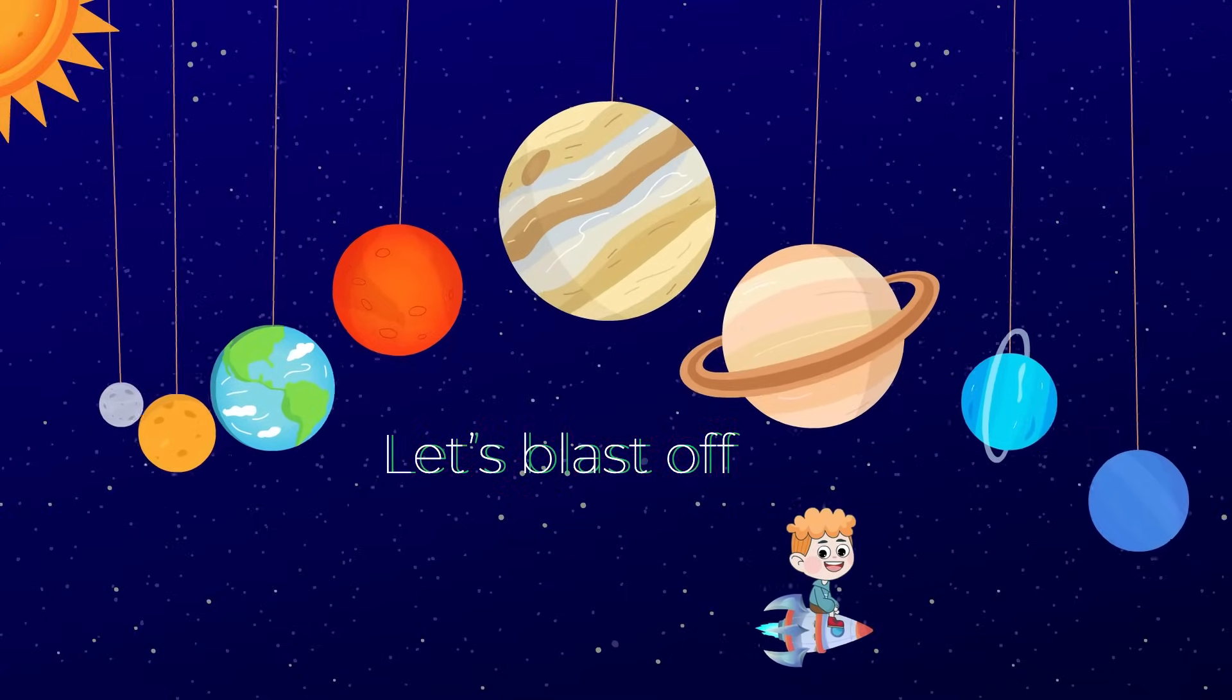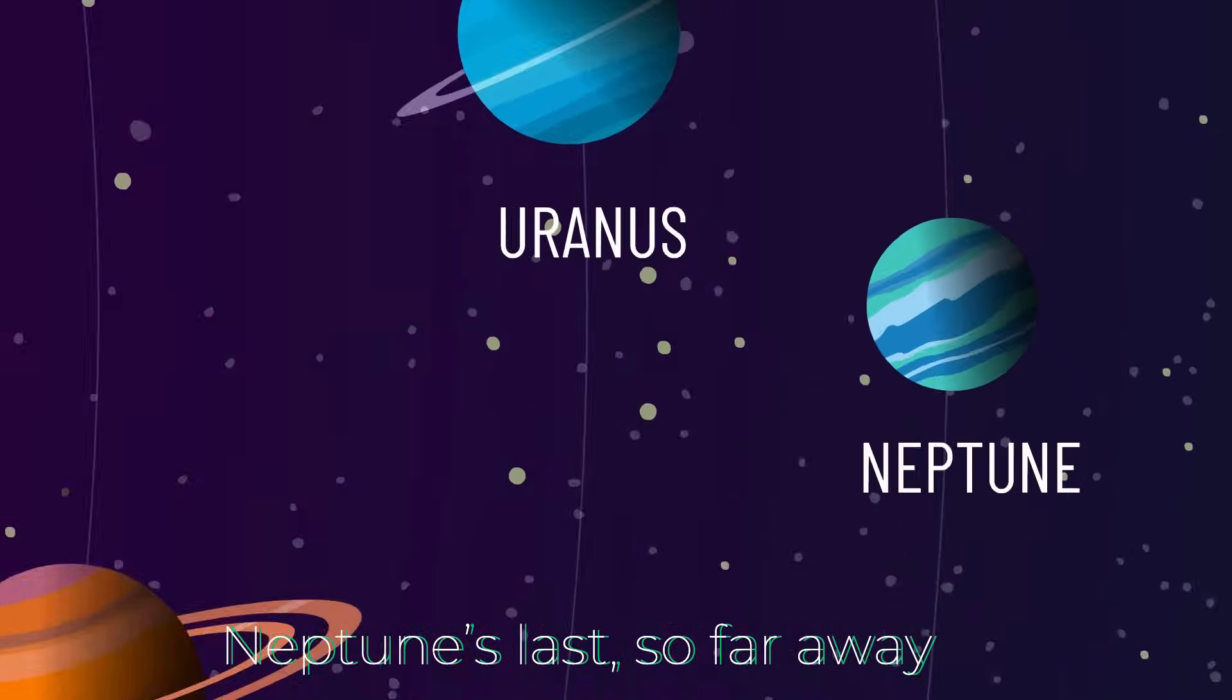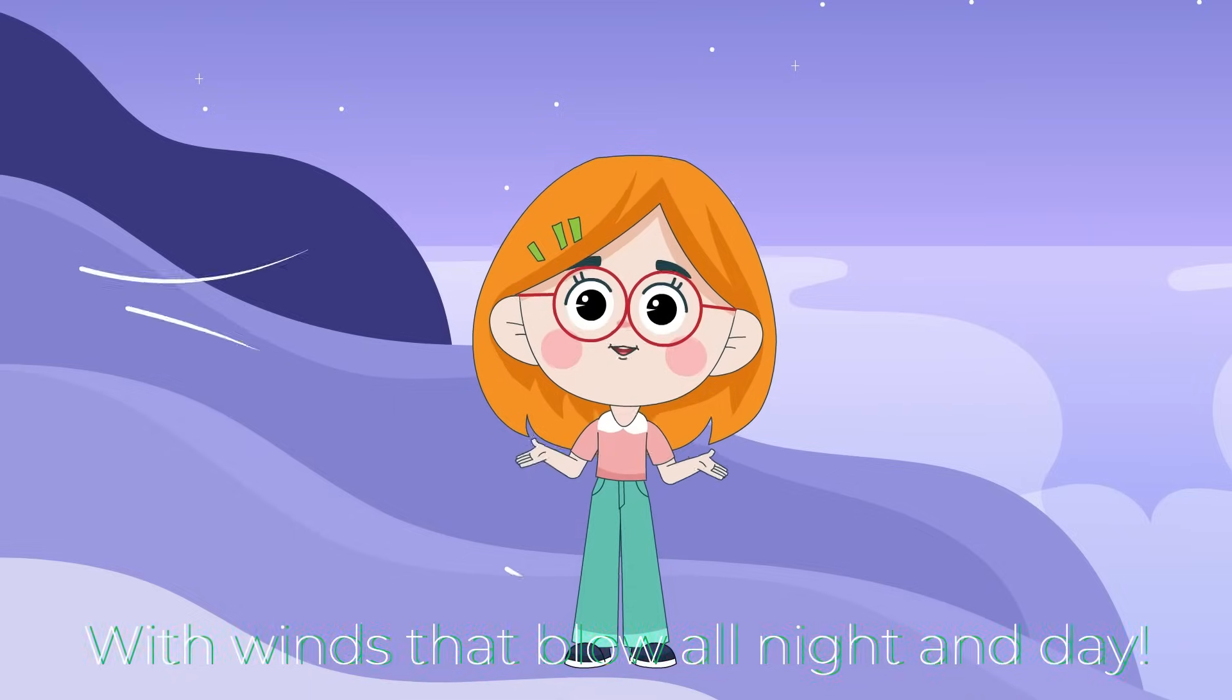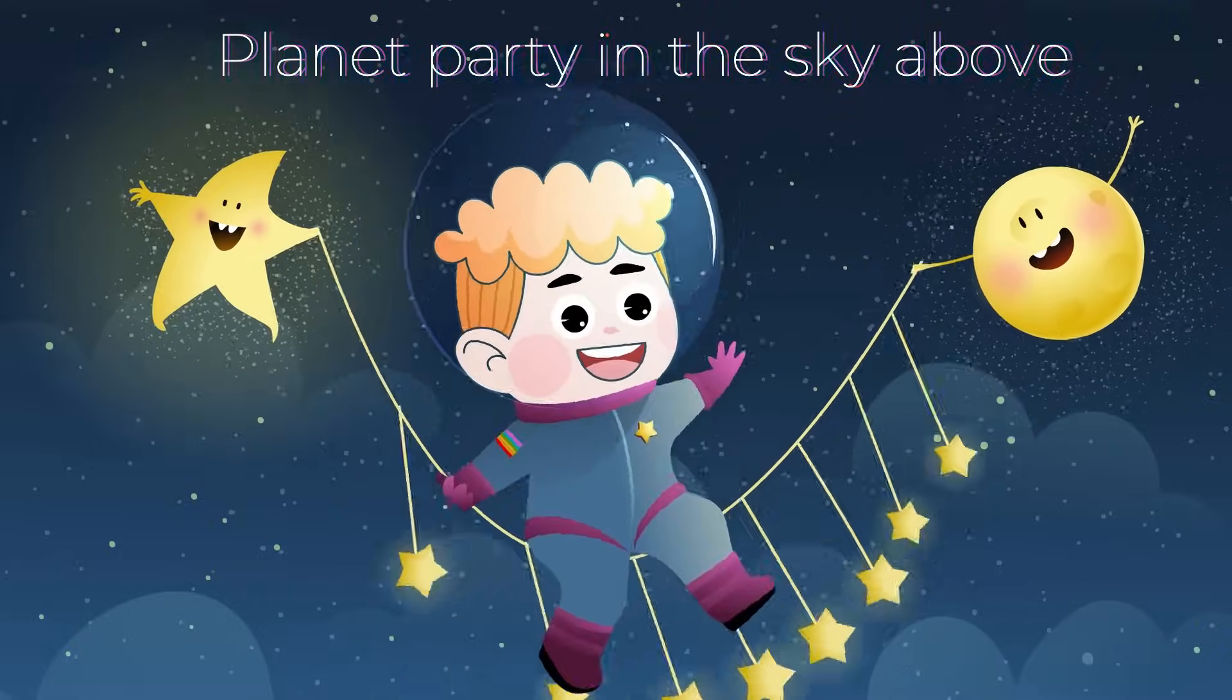Uranus spins on its side, the chilliest planet, take a ride. Neptune's last, so far away, with winds that blow all night and day. Planet party in the sky above.